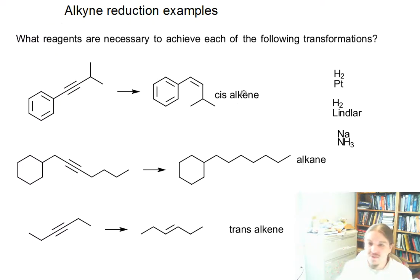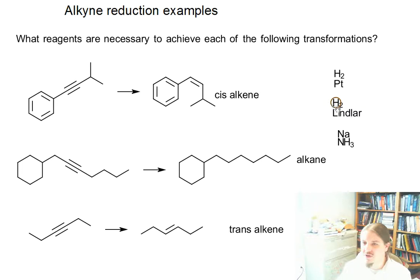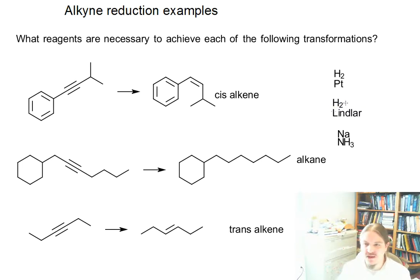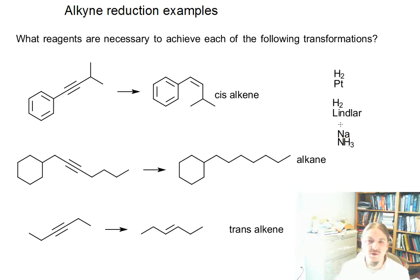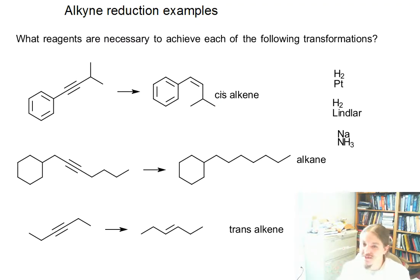Our first example is a cis alkene. Since we're making an alkene, we want to pick one of the two partial reductions. The two partial reductions are hydrogen gas with a poison catalyst like the Lindlar catalyst, or a dissolving metal reaction like sodium and ammonia. One of these makes trans and one of them makes cis, so if we figure out which one makes cis, we know the other one makes trans.